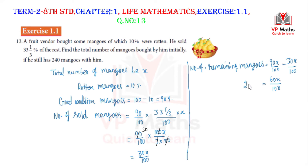We equate to find the total number of mangoes x. So 60x divided by 100 equals 240.